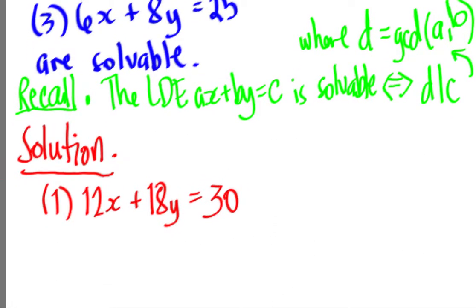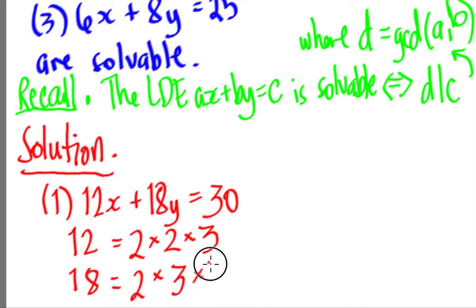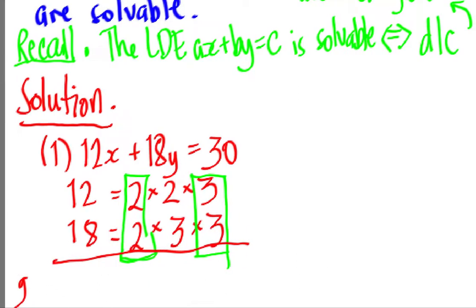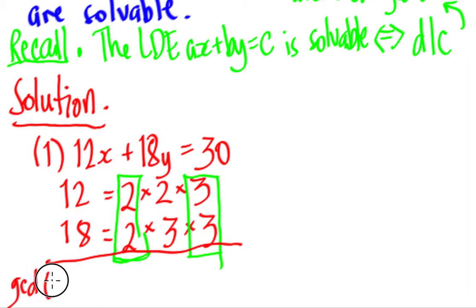If you want to have that, we can write it as, you know, like solving it. So we can have 12 is 2 times 2 times 3. That's 4 times 3. 18 is 2 times 9, so that's 3 times 3. And then we can see that the common numbers between them is the 2, which is common, and the other 3 over here. So the GCD is 2 times 3, which is equal to 6.